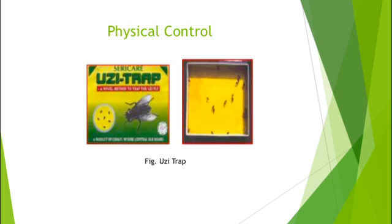The next controlling measure is physical control. This includes the Uzi trap, which is a powder available in the market. We dissolve this powder in water and keep the solution in trays near the doors and windows — both inside and outside of the rearing house — to trap the adult Uzi fly and prevent their entry into the rearing house.